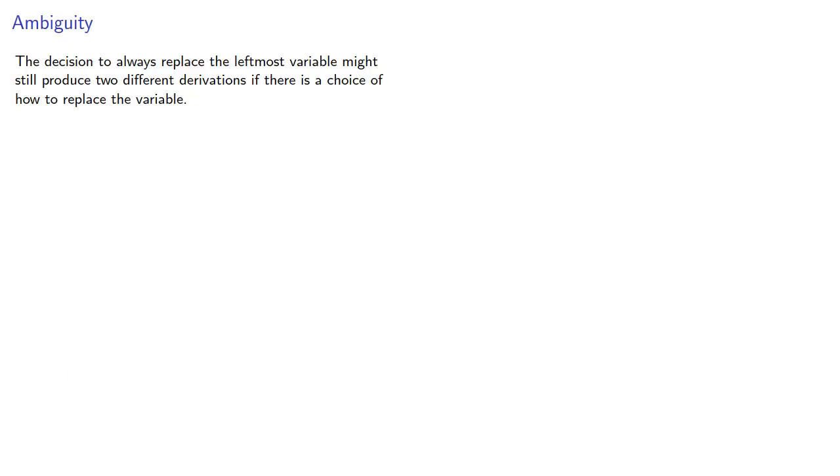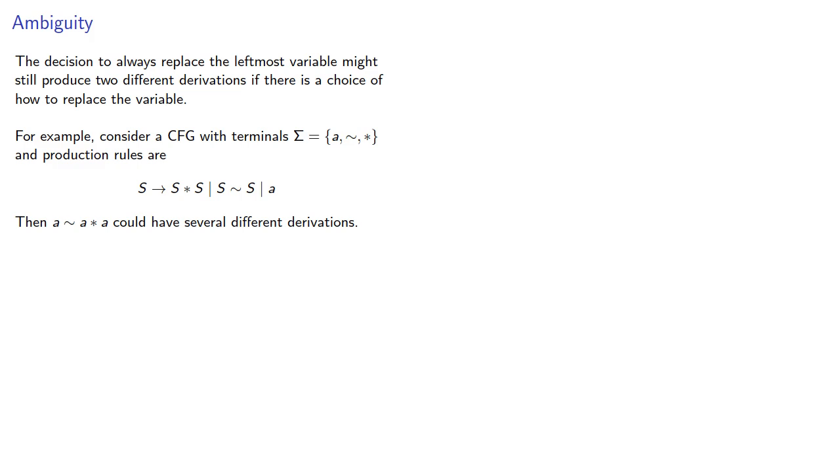The decision to always replace the leftmost variable might still produce two different derivations if there's a choice of how to replace the variable. For example, considering a CFG with certain terminals and production rules, a ∼ a * a could have several different derivations. We could begin with the production rule S → S * S, replace the leftmost variable with a, replace the right with S ∼ S, and then replace our terminals to get our production.